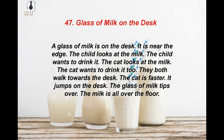A glass of milk is on the desk. It is near the edge. The child looks at the milk. The child wants to drink it. The cat looks at the milk. The cat wants to drink it too. They both walk towards the desk. The cat is faster. It jumps on the desk. The glass of milk tips over. The milk is all over the floor.